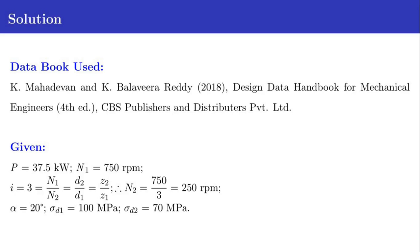The given data in this question is: P equals 37.5 kW, N1 the speed of the pinion is 750 RPM. The velocity ratio i equals 3, that is N1 divided by N2 or D2 by D1 or Z2 by Z1 equals 3. From this relation we can find out the speed of the gear as N2 equals 750 divided by 3 equals 250 RPM. The pressure angle alpha is 20 degrees. Sigma D1 equals 100 MPa and sigma D2 equals 70 MPa.